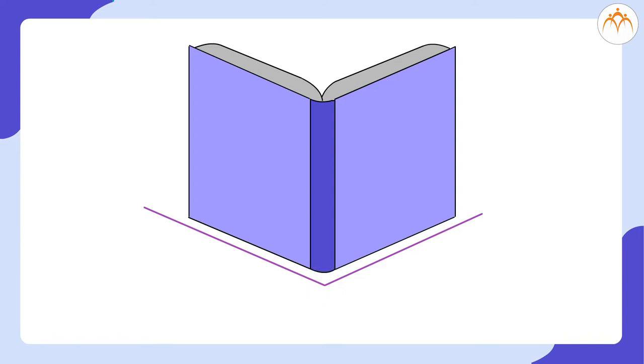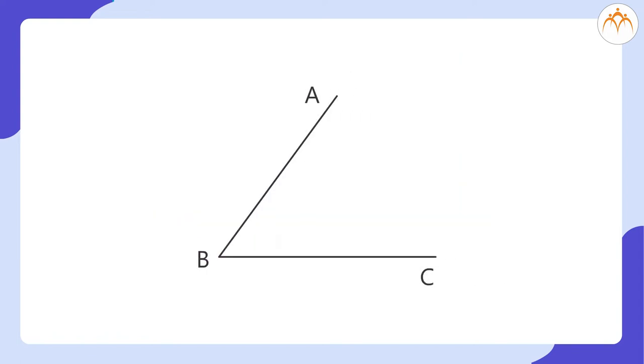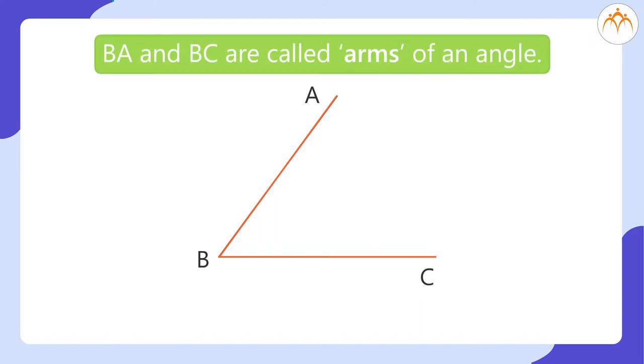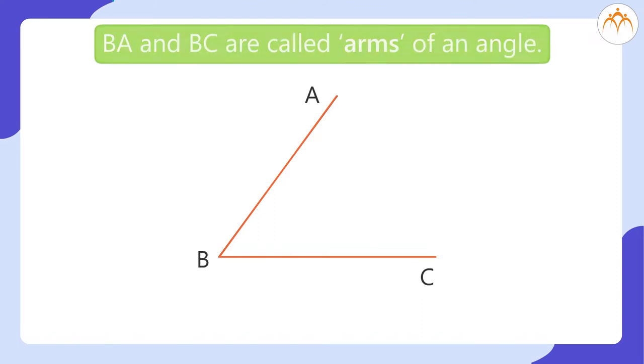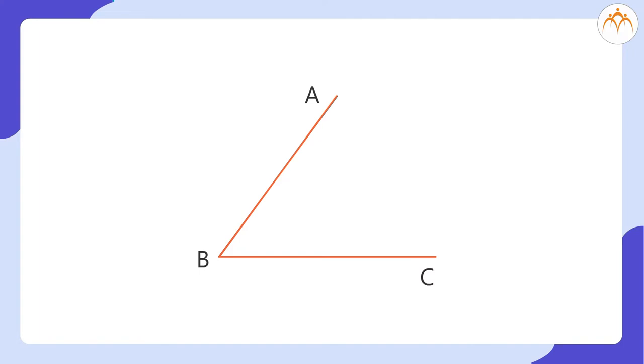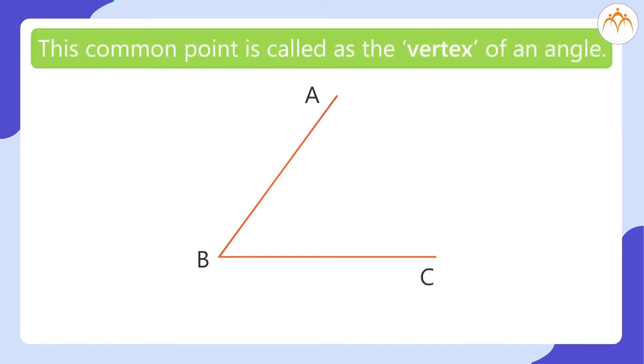These lines form an angle. Here the two lines BA and BC are called arms of an angle. The two arms meet at one common point. This common point is called as the vertex of an angle. In this figure, the vertex is point B.